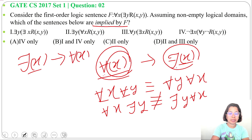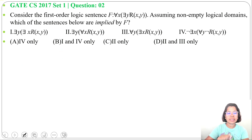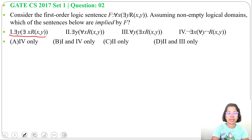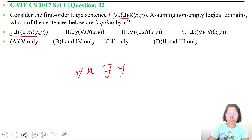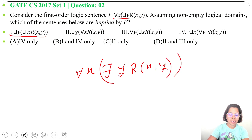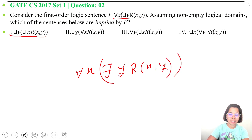If for some people it is true, it doesn't mean for all it is true. Now check statement 1: there exist Y, there exist X, R of X, Y. The given F is: for all X, there exist Y, R of X, Y. From for all X we can imply there exist X — if it is true for all, it is also true for some.